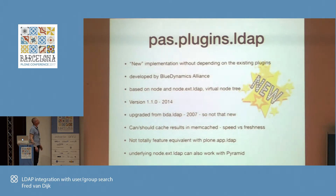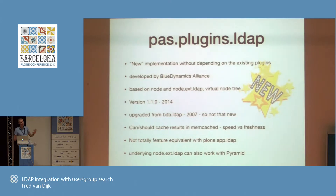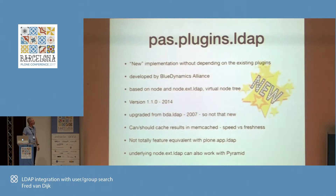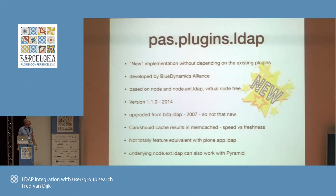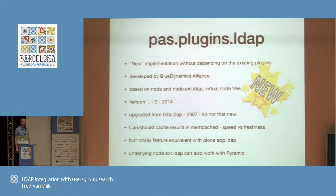One of the Plone providers here in Europe, Blue Dynamics, created a new plugin called PassPlugins LDAP, with a new underlying system where all that old stuff is not really needed. They base it on a system called Node — a kind of virtual tree of objects — that allows them to very quickly not only query an LDAP server but also do caching. It's a lot easier, especially if you not only have Plone but also other products like Pyramid. PassPlugins LDAP builds on Node.x LDAP, a Python package you can also use in Pyramid or other custom projects.